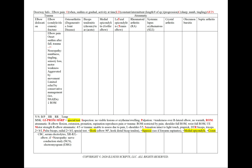In an elbow condyle or olecranon fracture, we'll see elbow pain with an onset that's also sudden after a fall or trauma. Since the fracture can involve the underlying nerve, we can note neuropathy — numbness, tingling, sensory loss, or motor weakness. It will be aggravated by movement, with limited relief from conservative management because the underlying fracture hasn't been fixed. We'll also note a decreased range of motion in our physical exam.